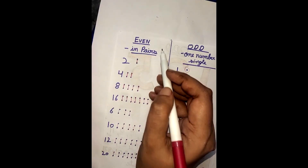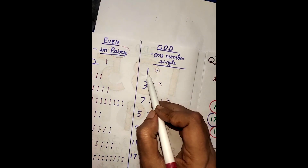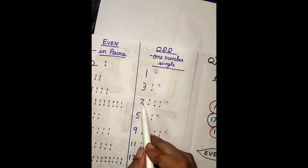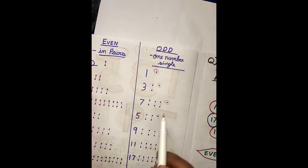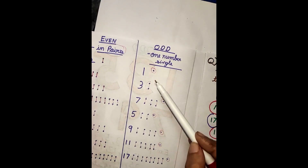As I said, for odd numbers one number is always single. So 1 is single. 3 has 1 pair but one number is single. 7 has 3 pairs and 1 single. 5 has 2 pairs and 1 single. 9 has 4 pairs and 1 single. 11 has 5 pairs and 1 single. 17 has 8 pairs and 1 single. 15 has 7 pairs and 1 single. In each of these odd numbers we always have 1 single.